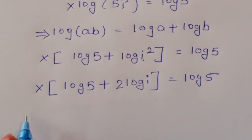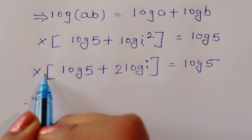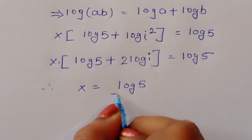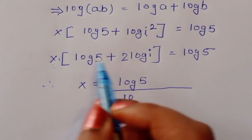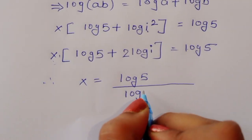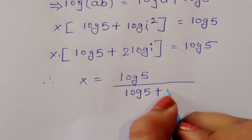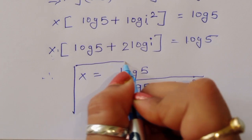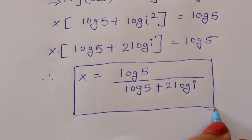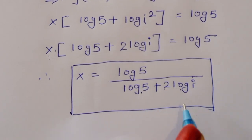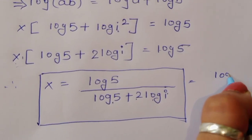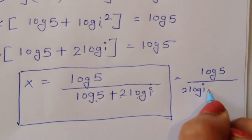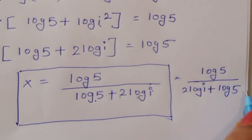Therefore, we can write the value of x. Value of x is equal to log 5 divided by log 5 plus 2 log i. Or we can write this as log 5 divided by 2 log i plus log 5. This is the first method.